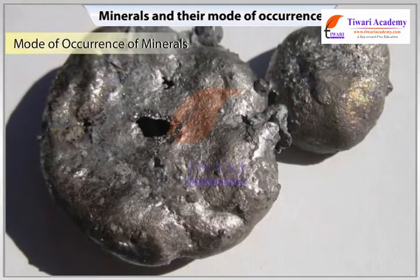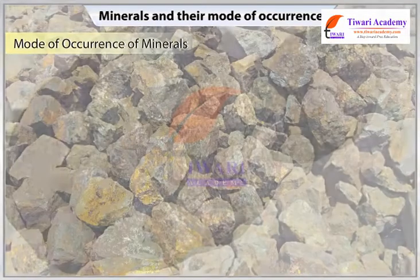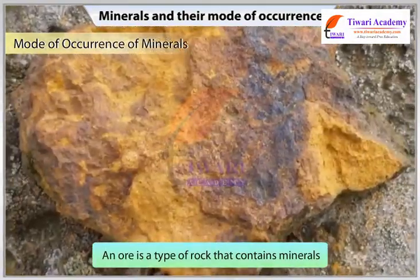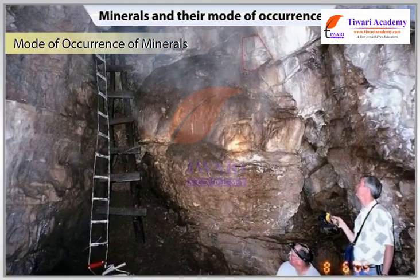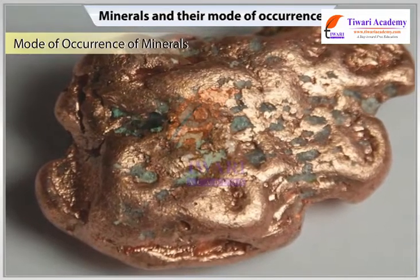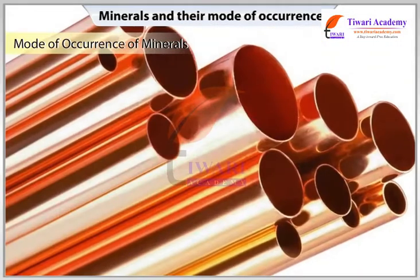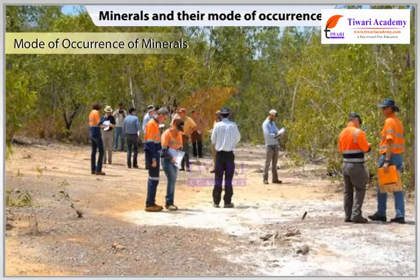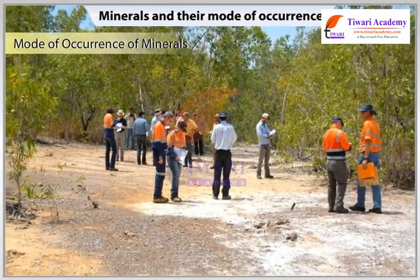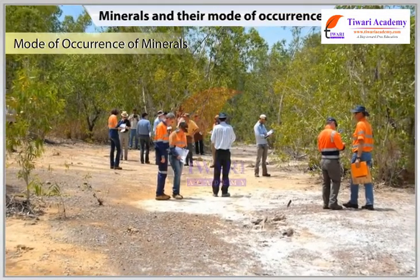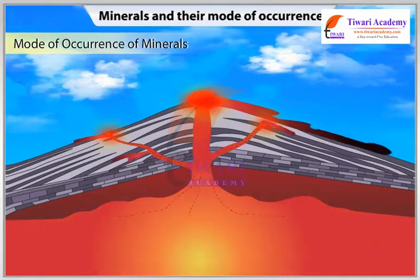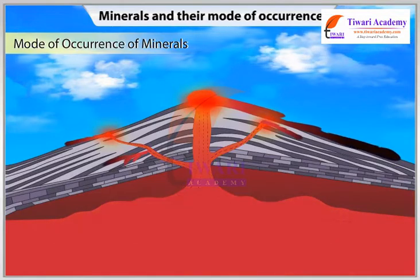Mode of occurrence of minerals. Minerals are usually found in ores. An ore is a type of rock that contains minerals. The ores are extracted through mining. The mineral content of the ore must be in sufficient concentration to make its extraction commercially viable. Before taking up the mining work, it is very important to know about the type of formation or structure of a mineral.